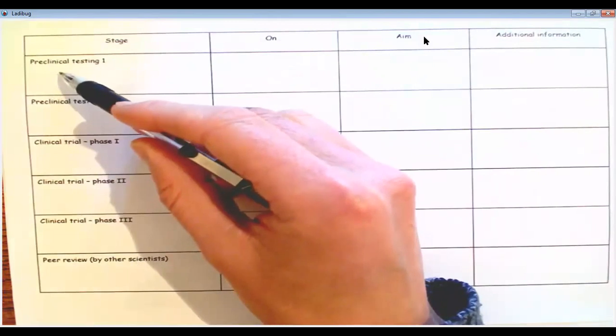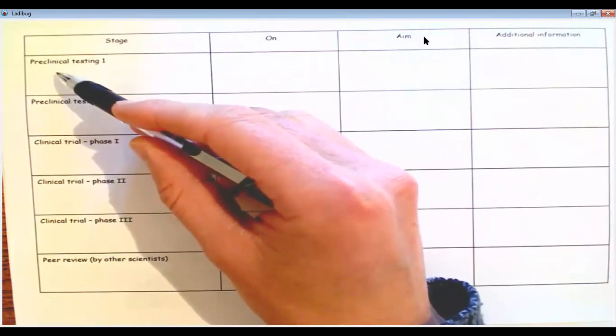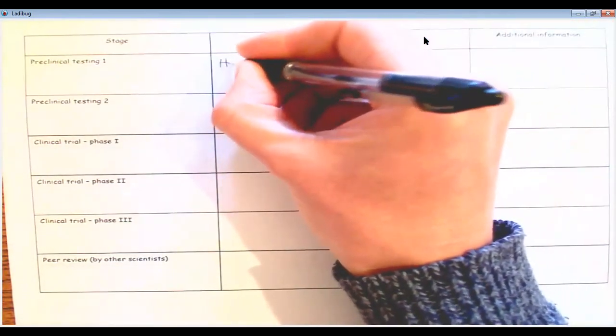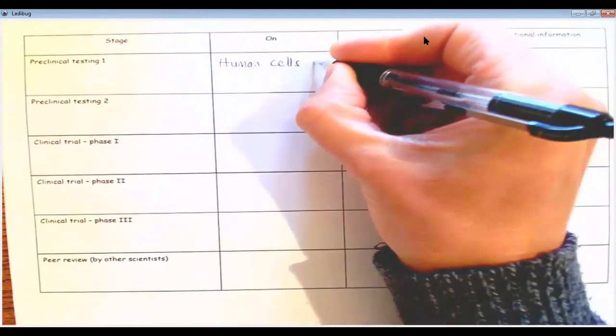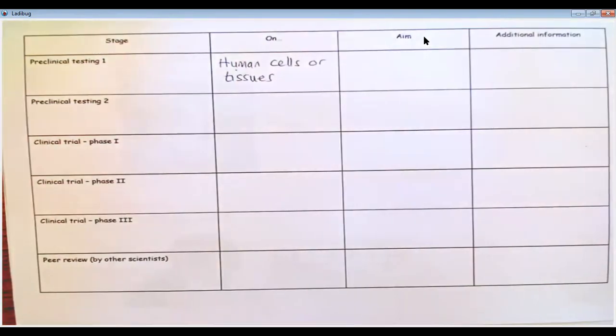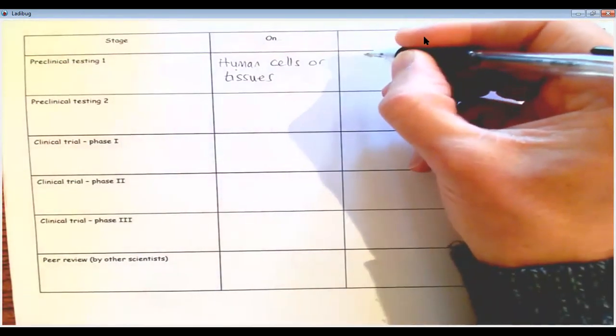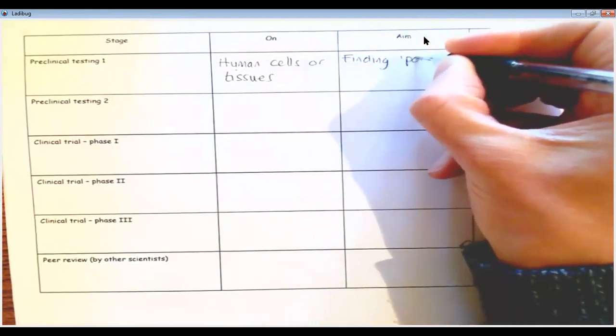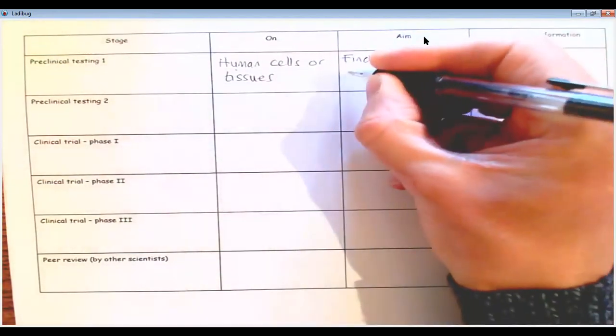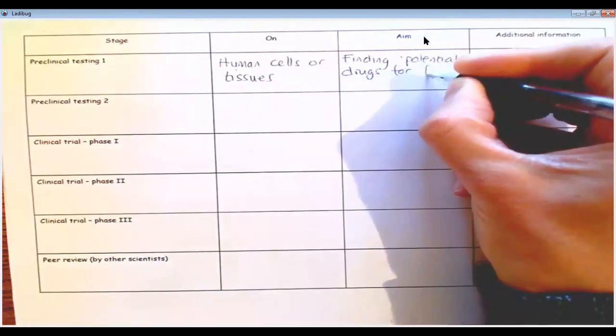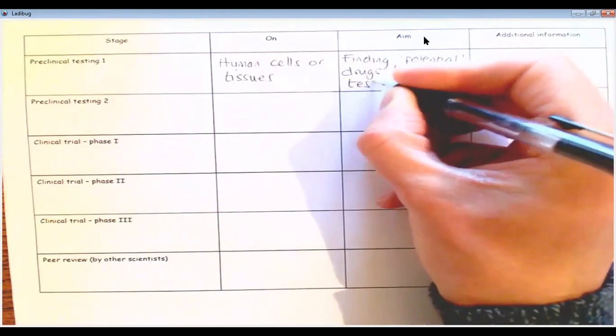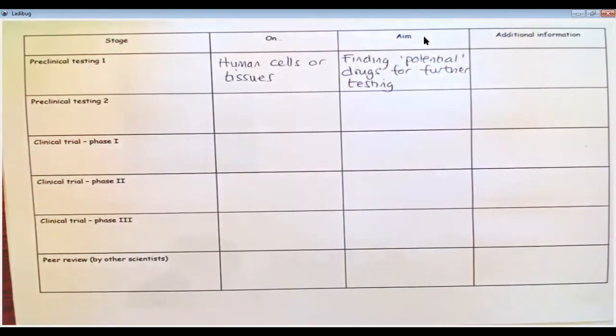Now, preclinical testing. But preclinical means we're testing before it gets to humans. So preclinical testing happens on human cells or tissues. So we're using human cells or tissues. We're not using a whole organism, just like a petri dish of cells or petri dish of tissue. Now, the aim is finding potential drugs for further testing. Essentially, we would screen, I don't know, tens or hundreds of different drugs to see what looks the most promising before we take it forward into the next stage.